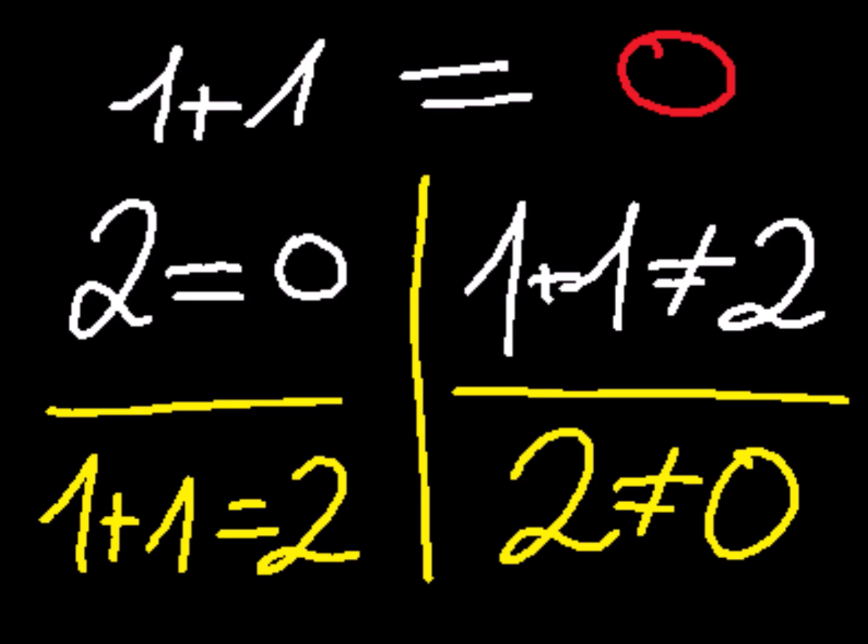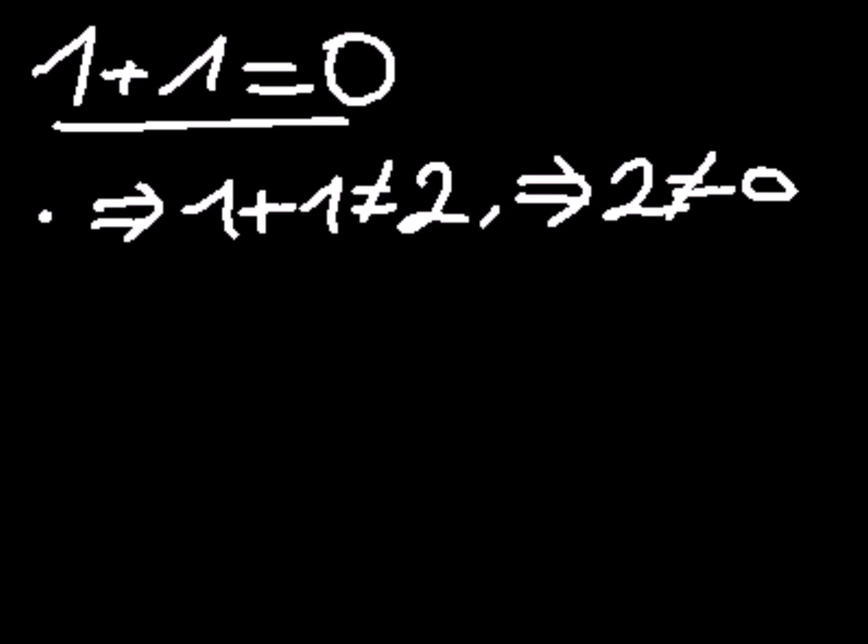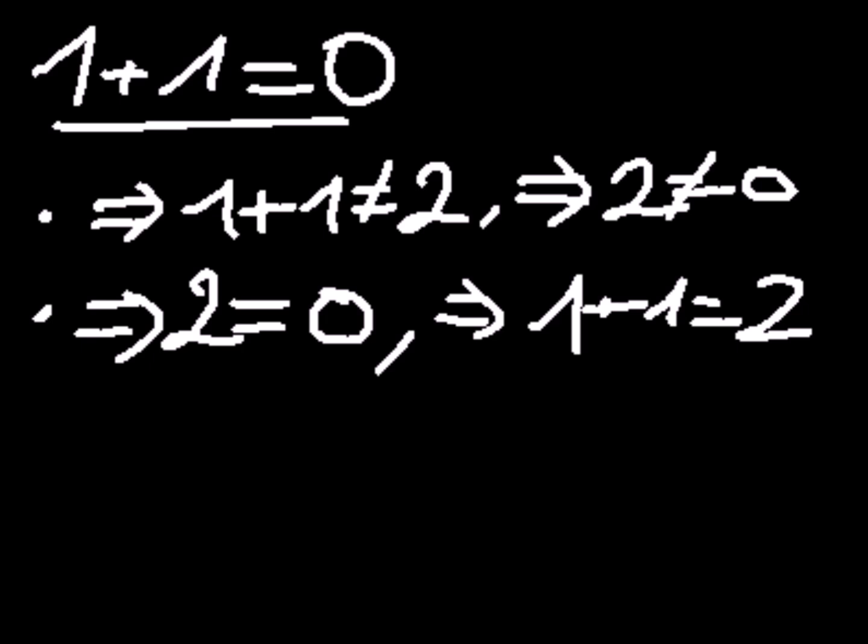After all, when two things are equal to the same thing, then they themselves are equal to each other. OK, now you can remove your hand and see the problem at hand. Let me summarize a little bit better here. If we suppose that 1 plus 1 equals 0, we could defend that 1 plus 1 is different from 2, as 0 and 2 are distinct from each other.